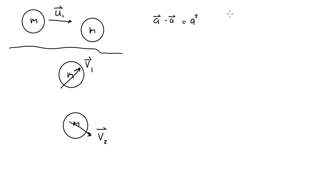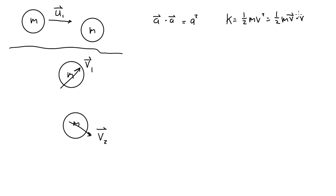For objects with kinetic energy, instead of writing one-half mv squared, we're going to write one-half m times v dot v. Let's set this up for this collision.